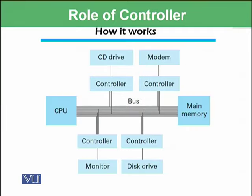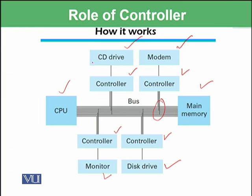So how does it work? We have a CPU and main memory connected via a bus for data transfer. Peripheral devices such as a modem, CD drive, disk drive, and monitor each have their own dedicated controllers, and these controllers are also connected to the bus, allowing them to communicate with the CPU. For example, if there is a signal from the CD drive that a disc has been ejected or inserted, that signal is passed to its controller, which then communicates with the CPU via the bus.